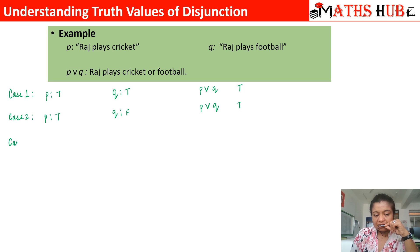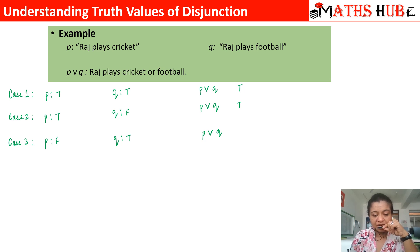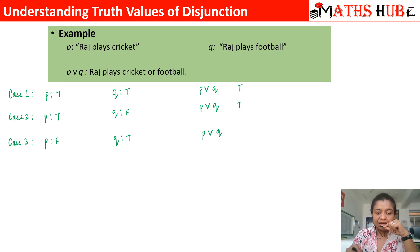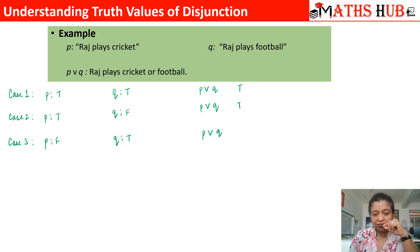Case number 3: P is a false statement and Q is a true statement. That means Raj doesn't play cricket but Raj is playing football. So we make the or combination: 'Raj doesn't play cricket or Raj plays football.' At least he is playing football, so we are happy with it. This is again going to be a true statement.